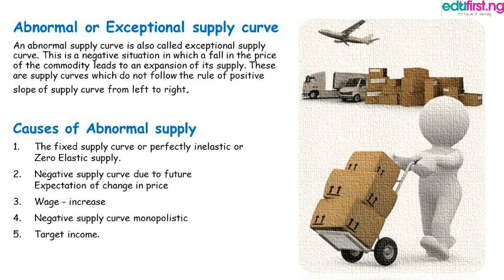An abnormal supply curve, also known as an exceptional supply curve, is a negative situation in which a fall in the price of a commodity leads to an expansion of its supply. These are supply curves which do not follow the rule of a positive slope from left to right. Causes of an abnormal supply curve include: (1) fixed supply curve for perfectly inelastic or zero elasticity supply, (2) negative supply curve due to future expectations of change in price, (3) wages or increase in wages, and (4) target income.